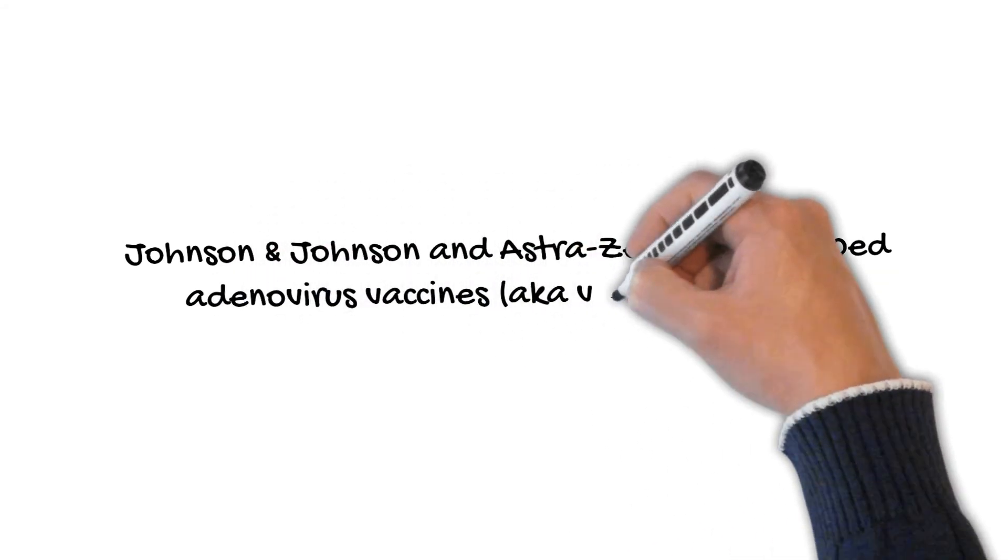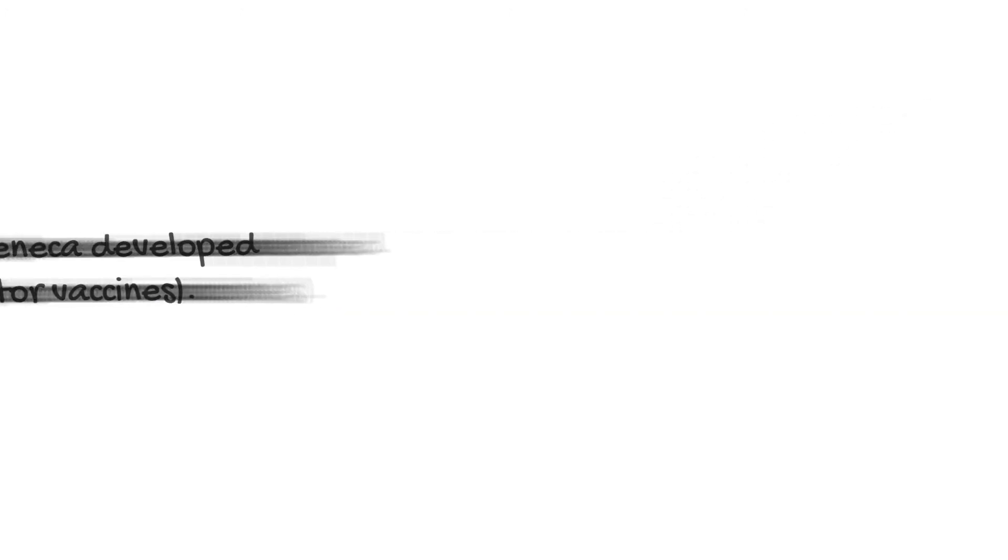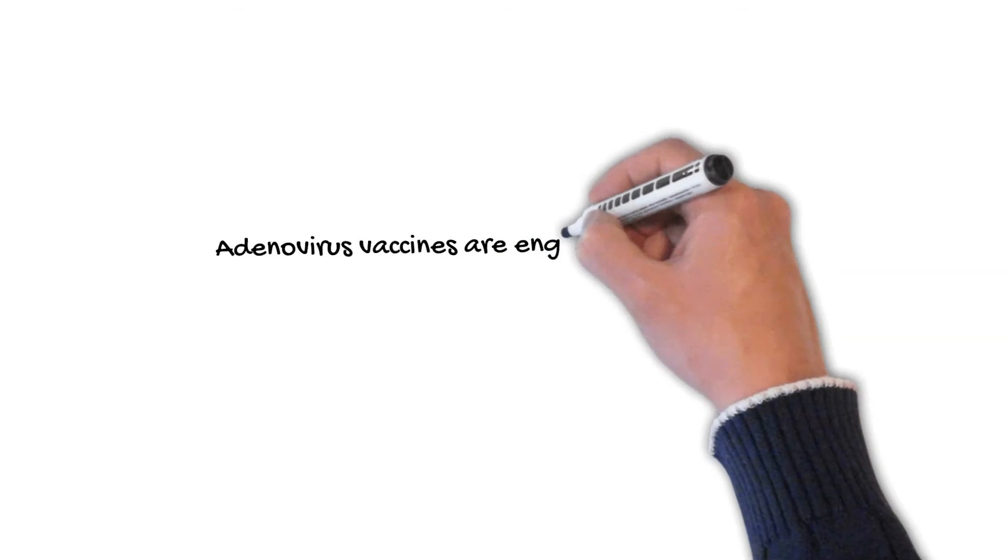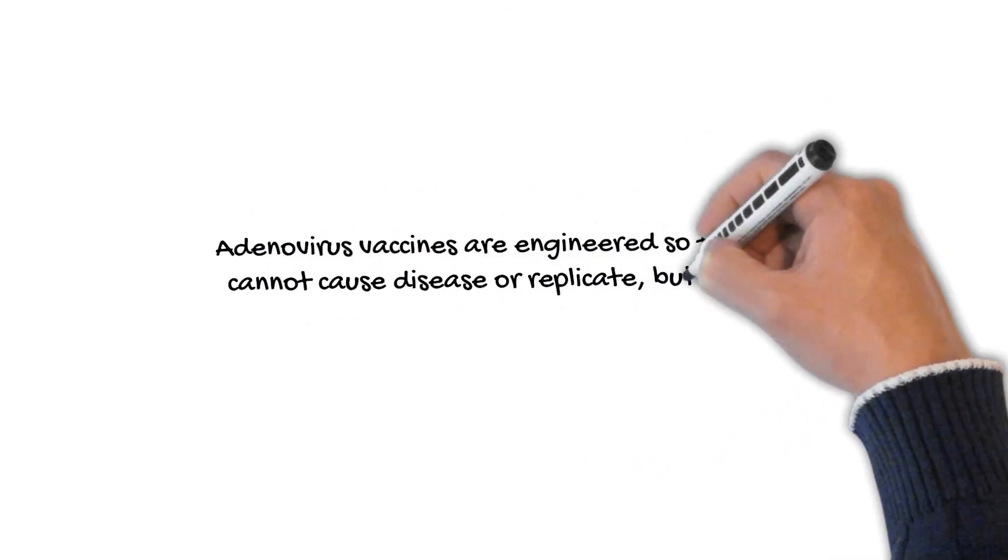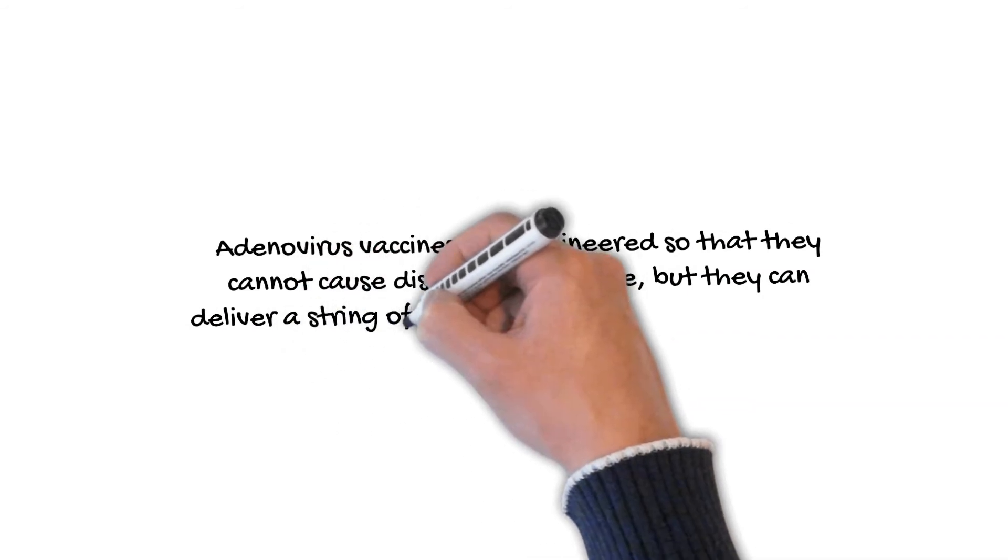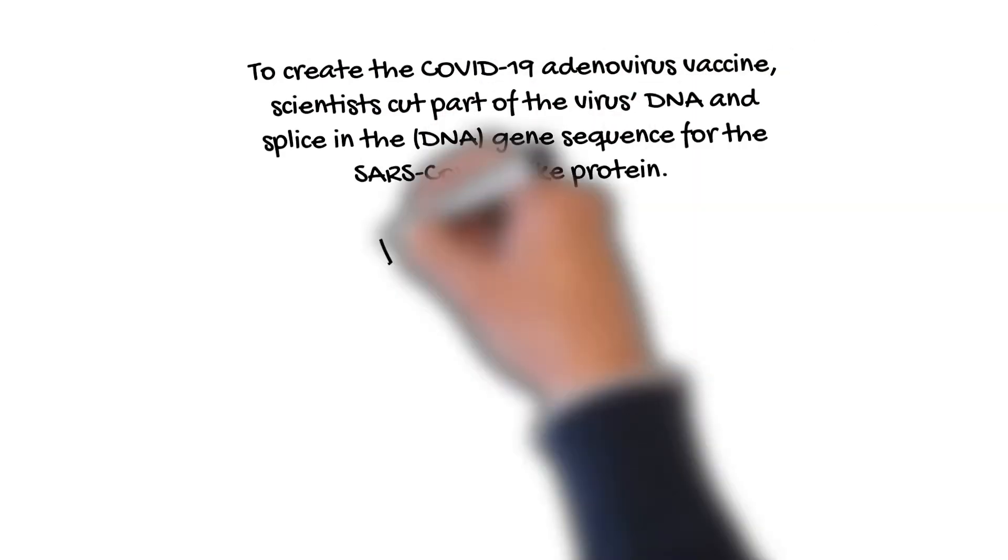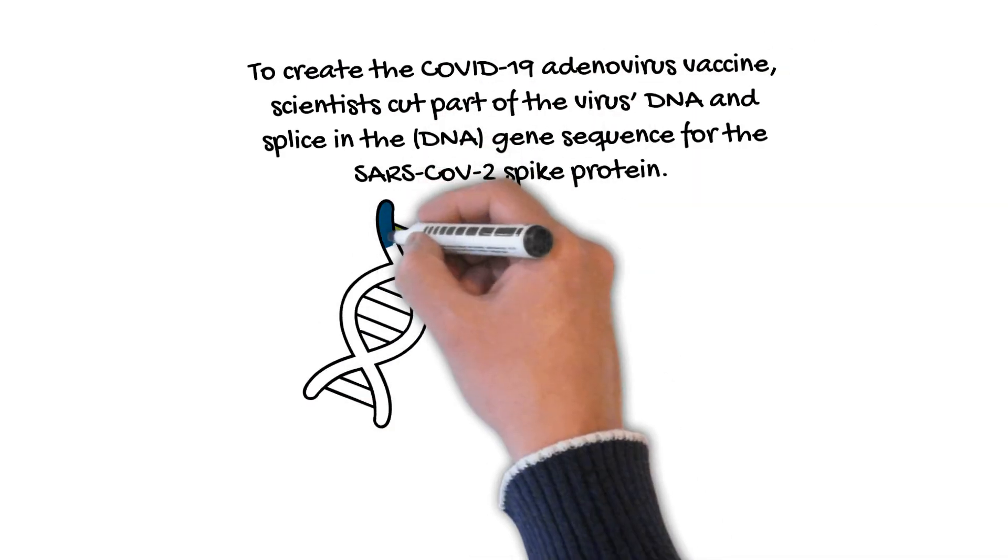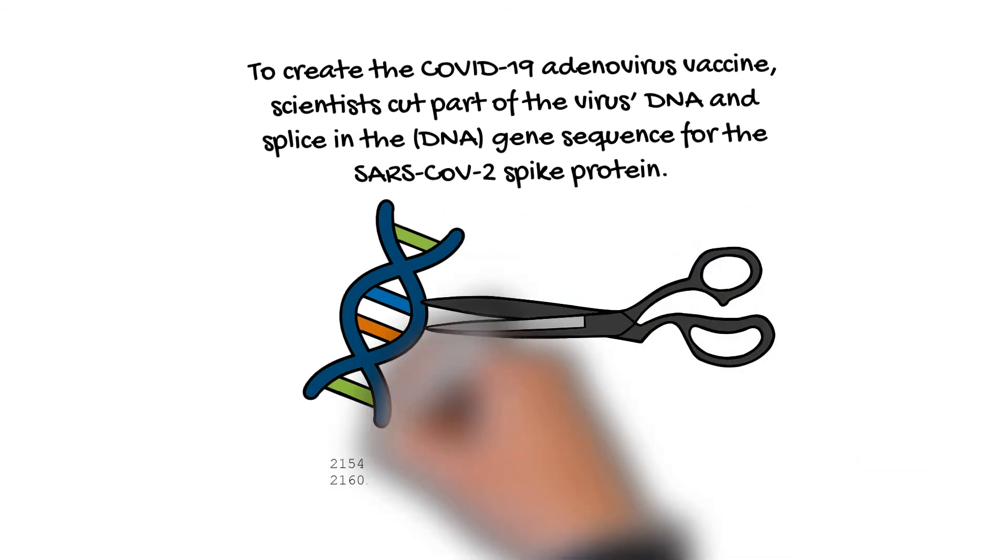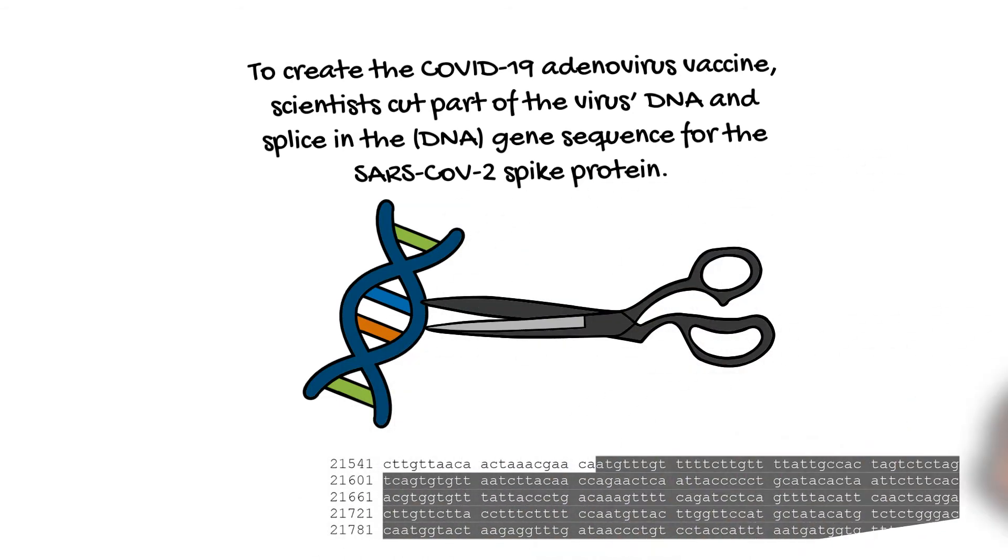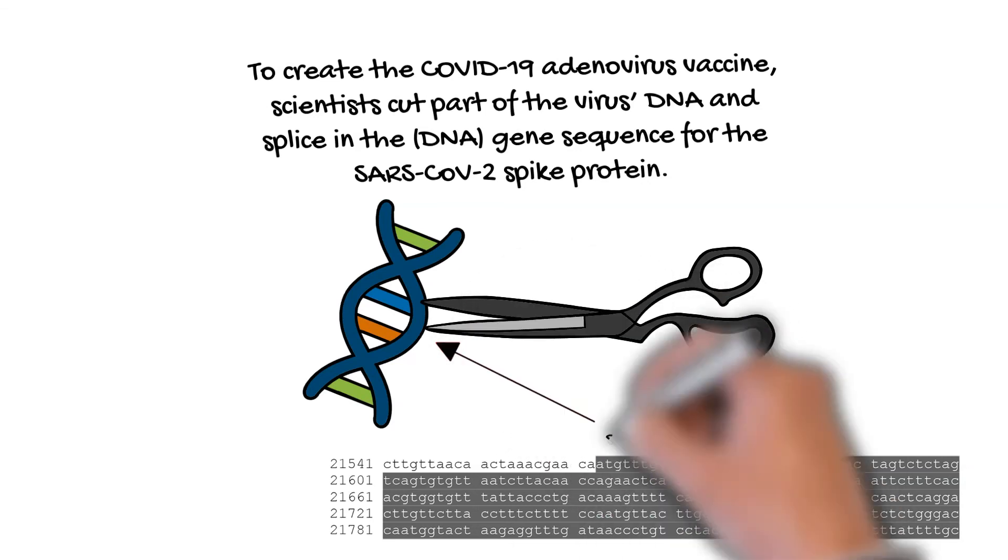Adenovirus vaccines are engineered so that they cannot cause disease or replicate themselves, but they can deliver or vector a string of nucleotides to the nucleus of a cell. Adenoviruses are double-stranded DNA viruses. So, to create the COVID-19 adenovirus vaccine, scientists had to cut part of the virus's DNA and splice in the DNA sequence for the SARS-CoV-2 spike protein.